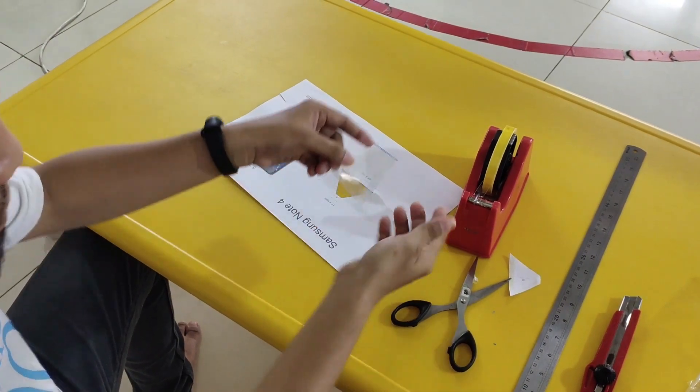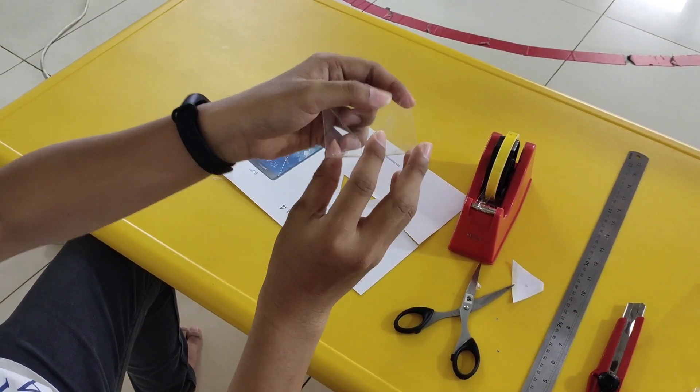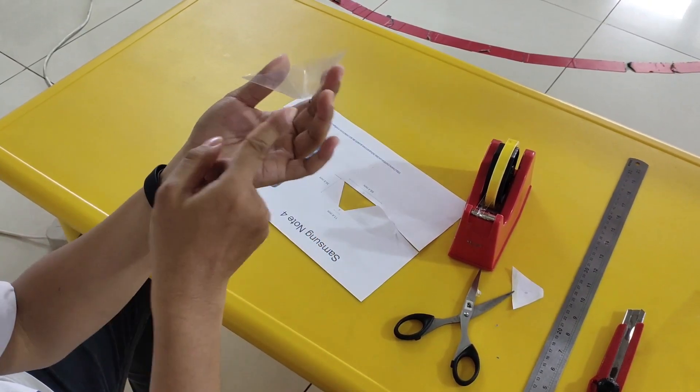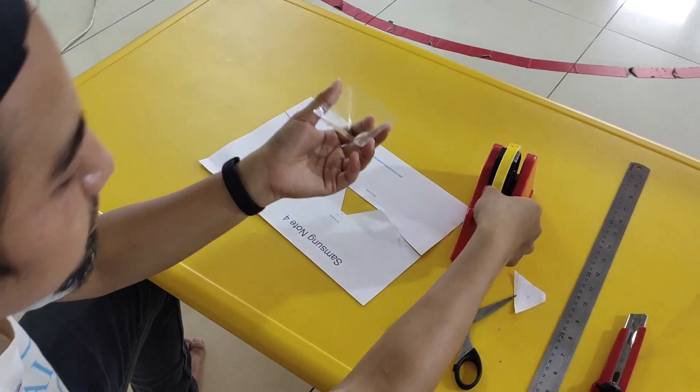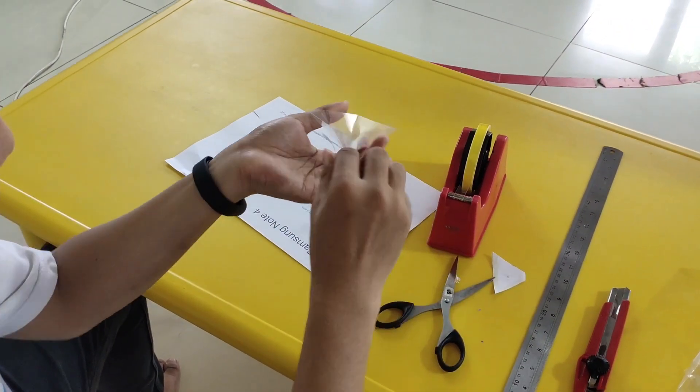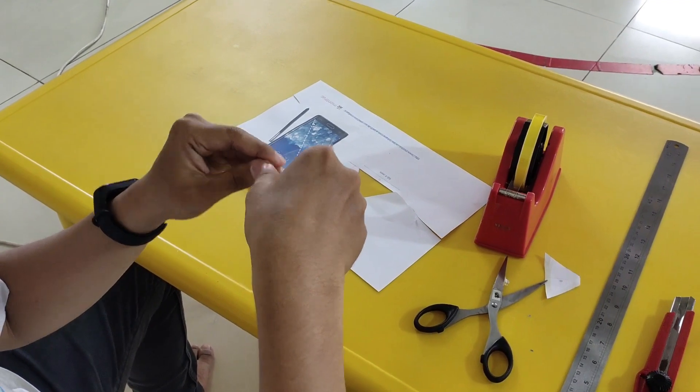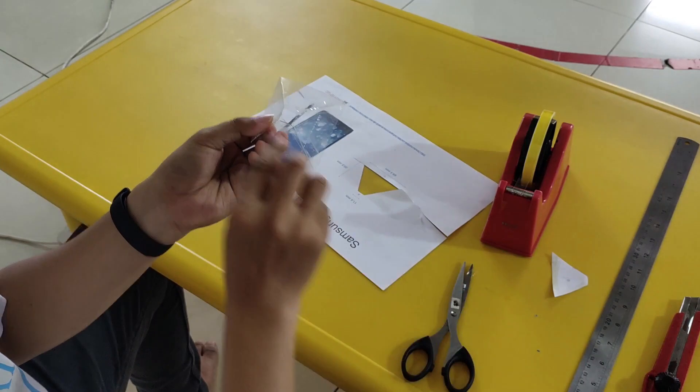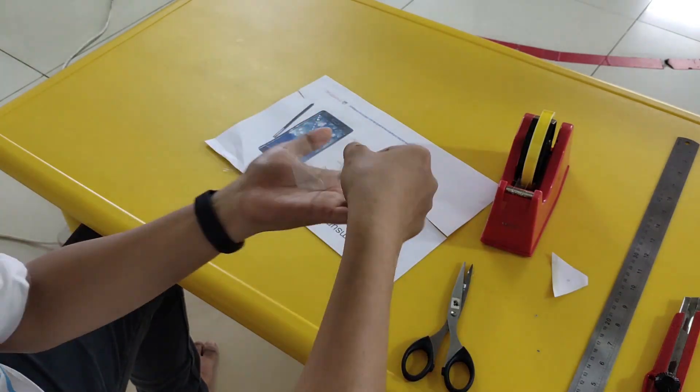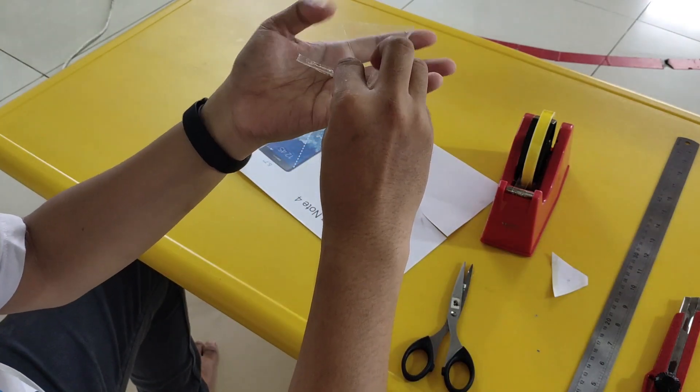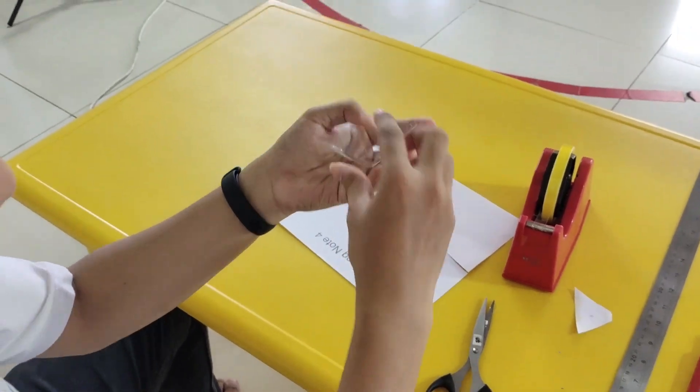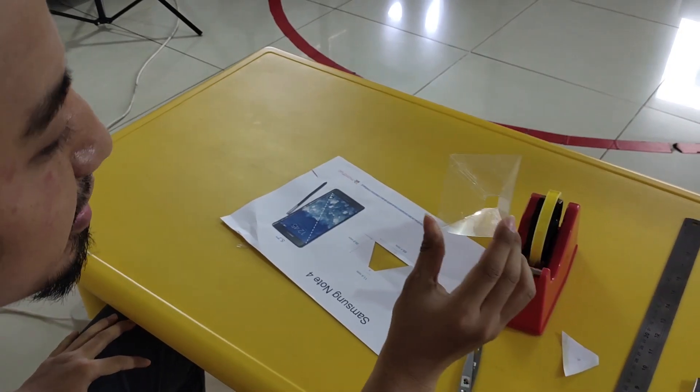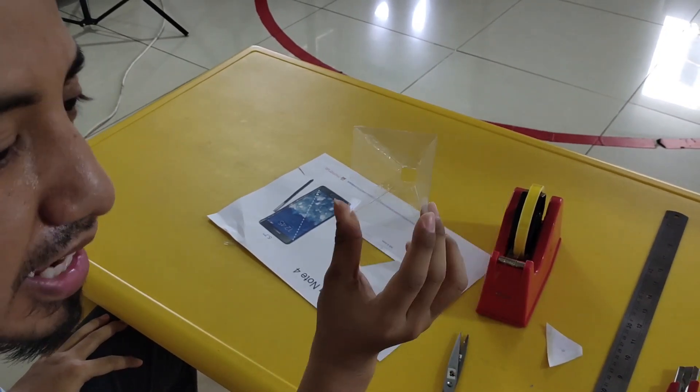Now we have our pyramid. Well, we can make it stiff again by taping more on the pyramid. Now we have our pyramid. Oh yeah, one more thing, one material that I forgot, we need to have a cell phone.